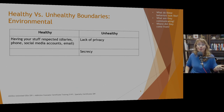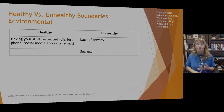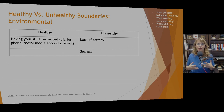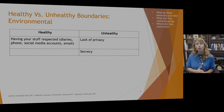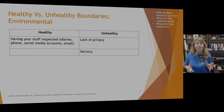Environmental boundaries include having your stuff respected — your diary, phone, social media accounts, email. I've worked with countless couples who struggled with environmental boundaries, where each partner was basically spying on the other, trying to get into their phone or demanding login credentials for social media. We need to ask: what does that behavior communicate? Insisting your partner is not allowed to have privacy communicates a lack of trust or fear of abandonment — and where is that coming from?